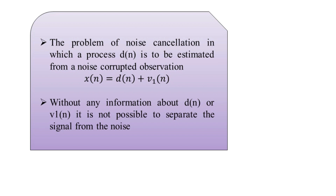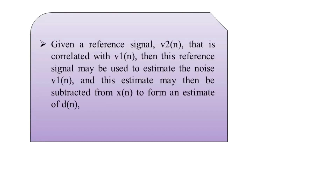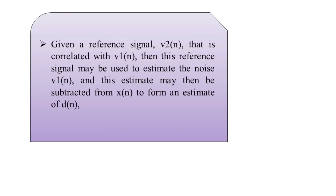So that we form the estimate of the desired signal. The estimate of the desired signal can be denoted by d̂(n), and this will be equal to x(n) minus the estimate v̂1(n).